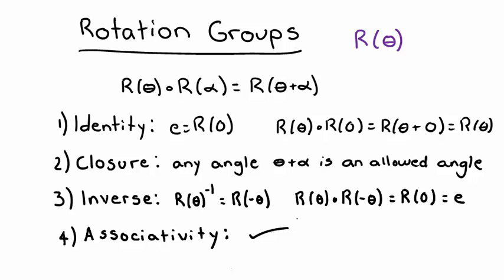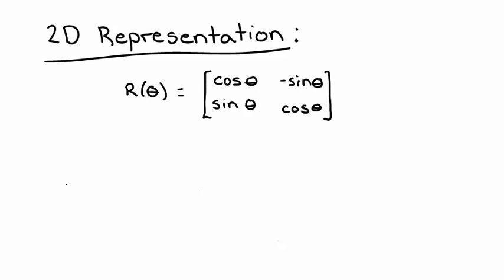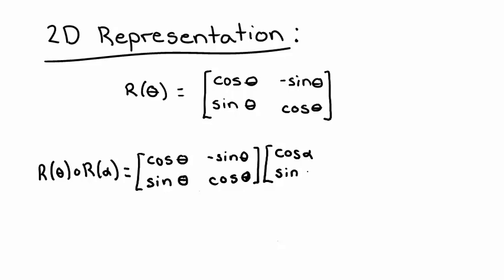So it turns out that the set of rotations in a plane does form a group, because all four requirements hold. Let's look at a two-dimensional representation of a rotation group. In this representation, each element can be written as the following 2x2 matrix, where theta is the angle by which we're rotating our coordinate system. We'll combine multiple elements via matrix multiplication. Following the example from before, I'll combine a rotation by theta with a rotation by alpha, multiplying the two matrices. Take a minute to pause the video and perform the matrix multiplication yourself. I want you to prove that the result is a matrix representing a rotation by the net angle theta plus alpha. You may need the following trig identities.